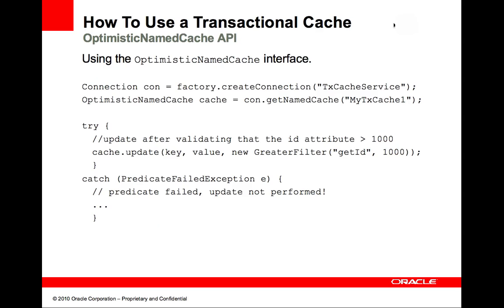This example demonstrates the use of the optimistic named cache interface. Note the filter passed into the update. If the filter check fails, a predicate failed exception is thrown. If the filter check passes, the update is made.